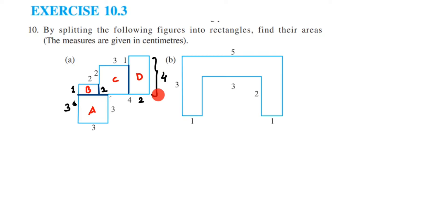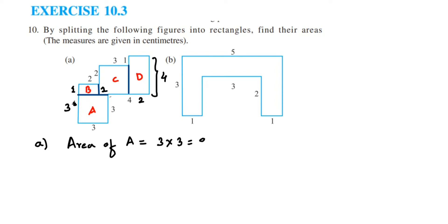We're going to find the area of each shape and add them up. First, area of A: it's a square shape — all sides are 3 — so area equals side times side, which is 3 × 3 = 9 centimeters squared.